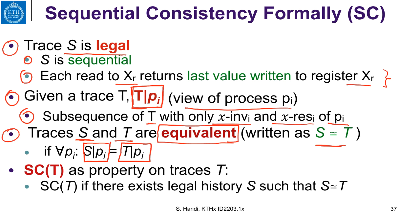Two different traces are equivalent if from each process's point of view it sees the same sequence of invocations and responses. This implies the traces have the same events. Now, a trace is sequentially consistent if there exists a legal history S — recall that a legal history is sequential — such that trace T is equivalent to S, meaning each process has the same view. That is the formal definition of sequential consistency.